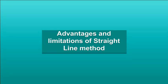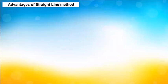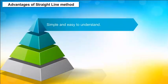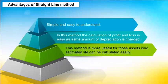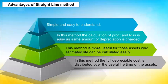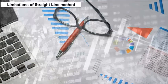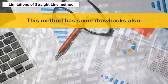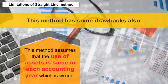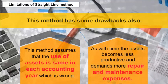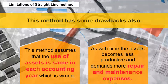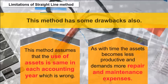Advantages and Limitations of Straight Line Method: Advantages — it is simple and easy to understand; calculation of profit and loss is easy as the same amount of depreciation is charged; it is more useful for assets whose estimated life can be calculated easily; and the full depreciable cost is distributed over the useful lifetime of the asset. Limitations — this method assumes that the use of assets is the same in each accounting year, which is incorrect, as with time assets become less productive and demand more repair and maintenance expenses, making it inadvisable to charge the same amount of depreciation every year.